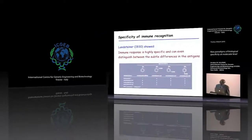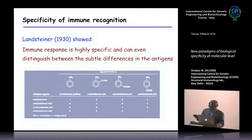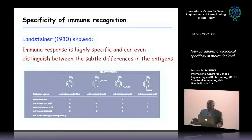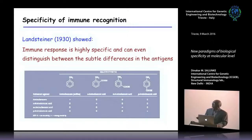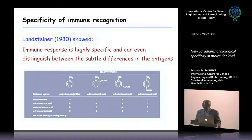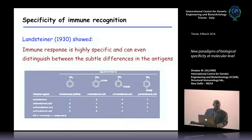Specificity in the context of the immune system is a very important aspect. Self/non-self discrimination is based on immunology, and how specific an immune response can be was described on the basis of Landsteiner's experiments, done as early as 1930, showing that immune response is very specific — so specific that even subtle molecular differences in a hapten can be distinguished.